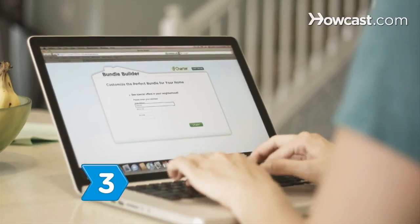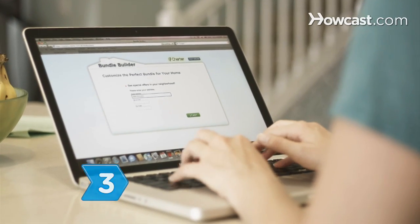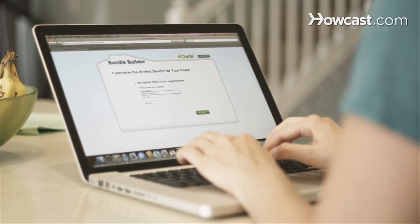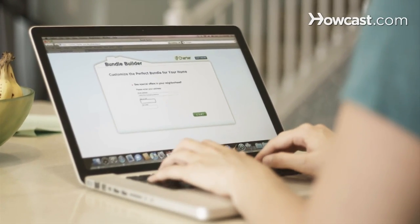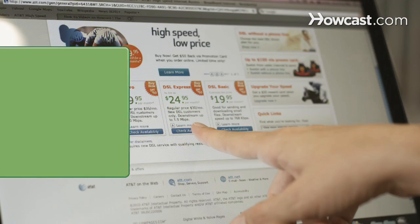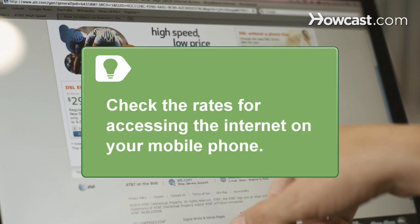Step 3. Set up an account through your ISP for data access through your phone. Find out how much accessing the internet will cost and get a data access plan that fits your needs based on how much you will be browsing the internet.